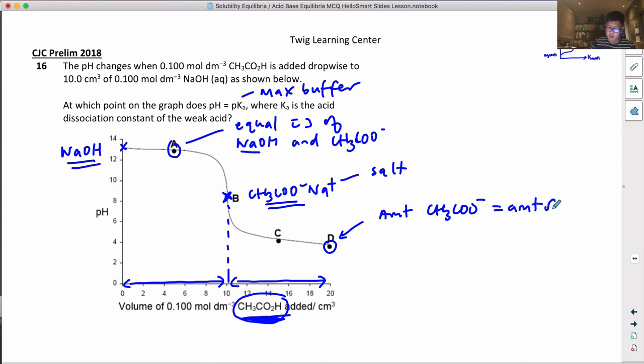Which means at point D the amount of CH3COO- will equal the amount of CH3COOH, which means they would also have the same concentration.